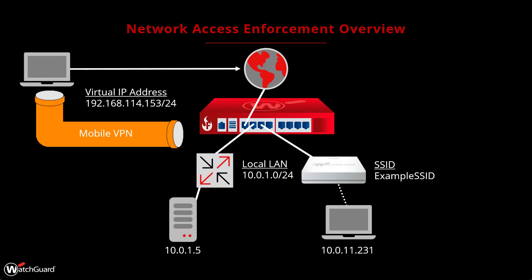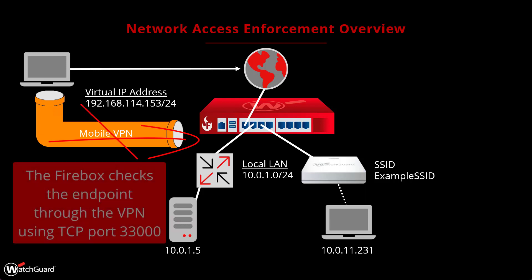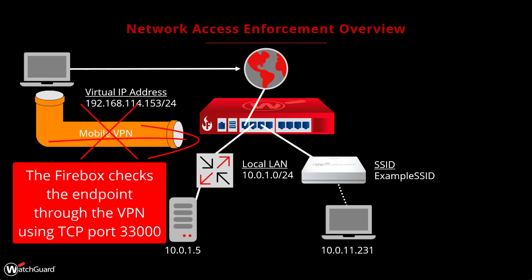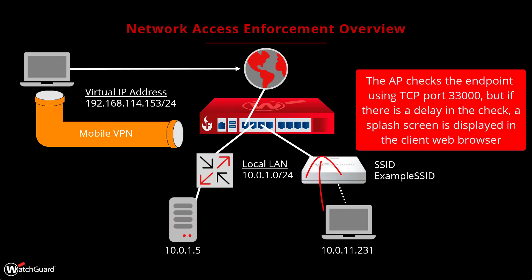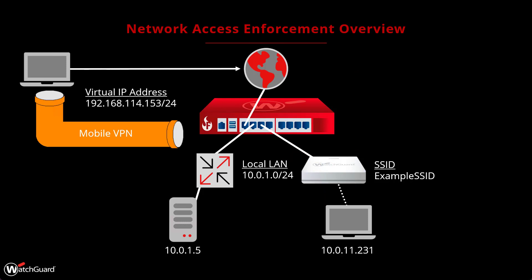For the first situation, when you have mobile VPN clients that connect to the Firebox, you can use network access enforcement to disconnect mobile VPN sessions when clients do not have the WatchGuard endpoint software installed. For the access point example, the same thing holds true — if a client doesn't have the endpoint software installed, it will be unable to pass traffic on the network.